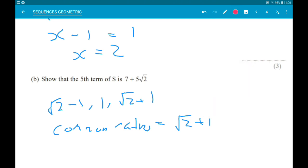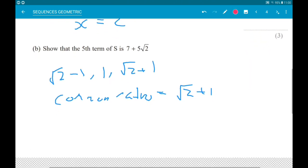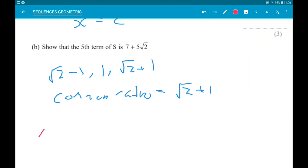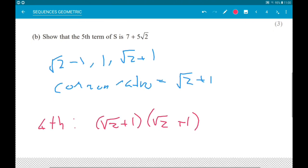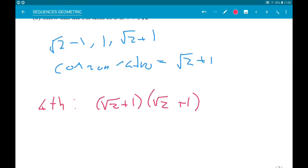So, to get the fourth term, we're going to do root 2 add 1, times root 2 add 1. Now, if we expand that, root 2 times root 2 is 2.